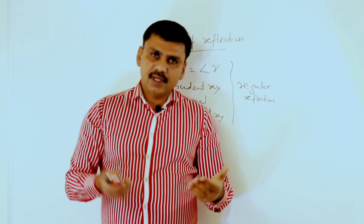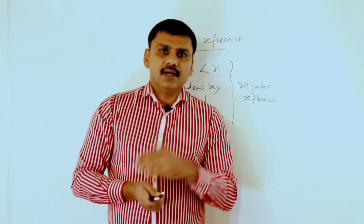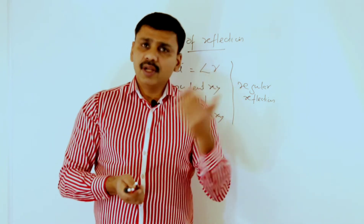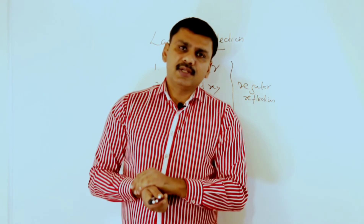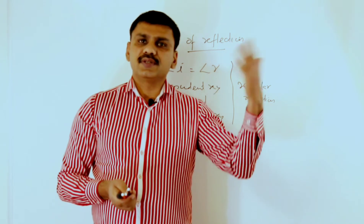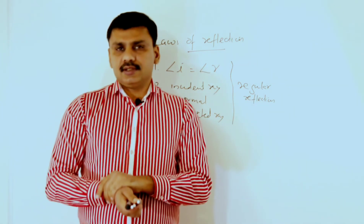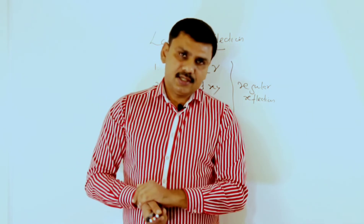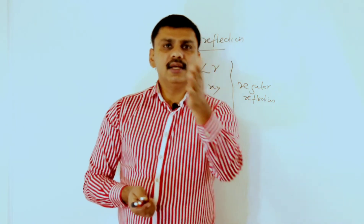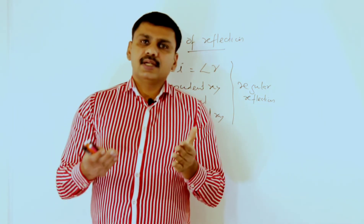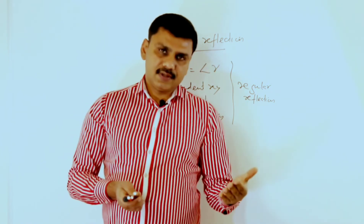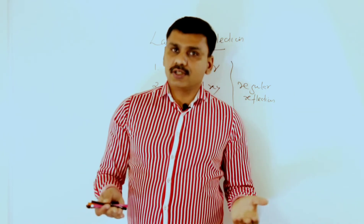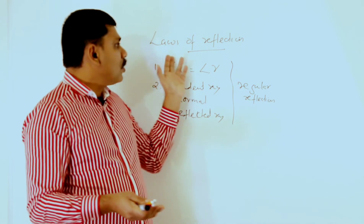To summarize the key terms: the incident ray is the ray falling on the surface; the normal is an imaginary line 90 degrees to the surface on which you can draw infinite normals; the reflected ray is the ray bouncing back to the same medium; the angle of incidence is the angle between the incident ray and the normal; and the angle of reflection is the angle between the normal and the reflected ray. The laws of reflection are valid only in the case of regular reflection.